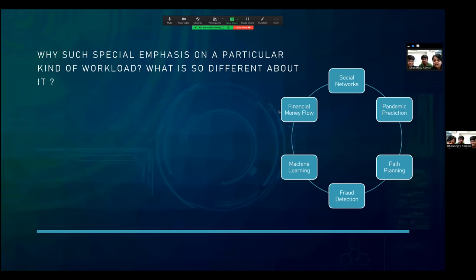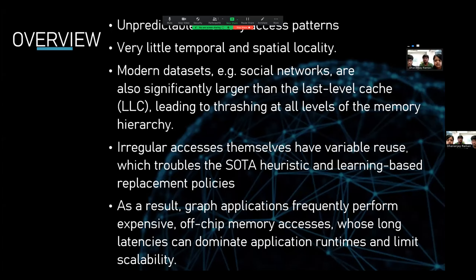Why is graph analytics so important in today's world? Because it is a part of various domains like social networks, pandemic prediction and allotment. But why is this workload so different from the other workloads we have seen so far? We went through a variety of papers and we found some common links which include unpredictable access patterns, very little temporal and spatial locality, thrashing at all levels of the memory hierarchy, irregular accesses themselves have variable reuse which troubles the state of the art heuristic and learning based replacement policies. And as a result, they produce a lot of off chip memory accesses leading to high latency.